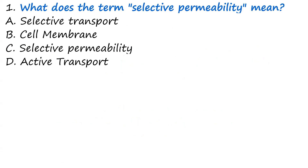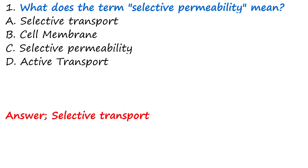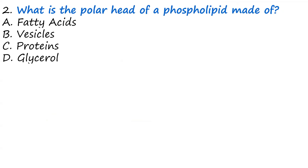Question one: What does the term selective permeability mean? A, selective transport. B, cell membrane. C, selective permeability. D, active transport. The answer is selective transport, because selective permeability means the ability of the cell membrane to control what gets in and out of the cell — selecting what is important to the cell and what is not.